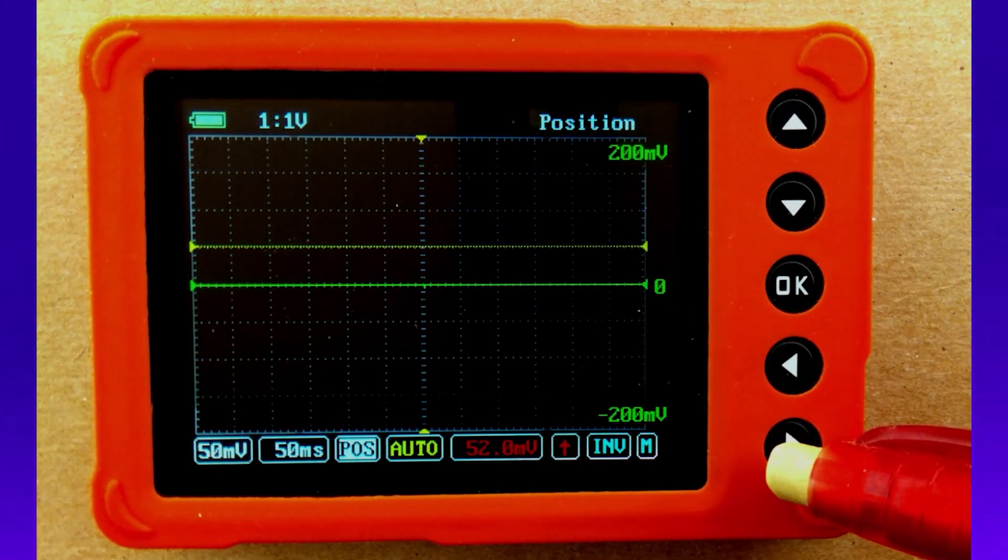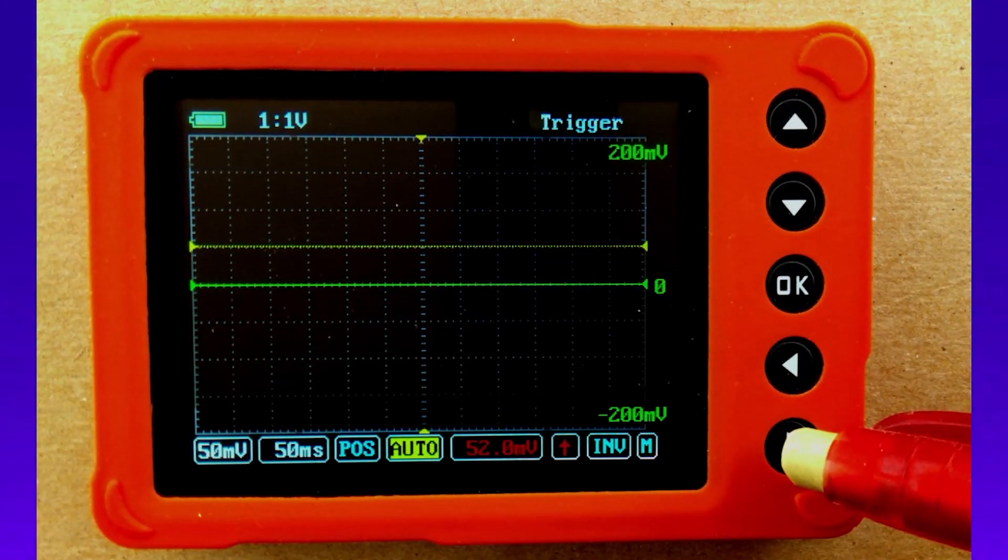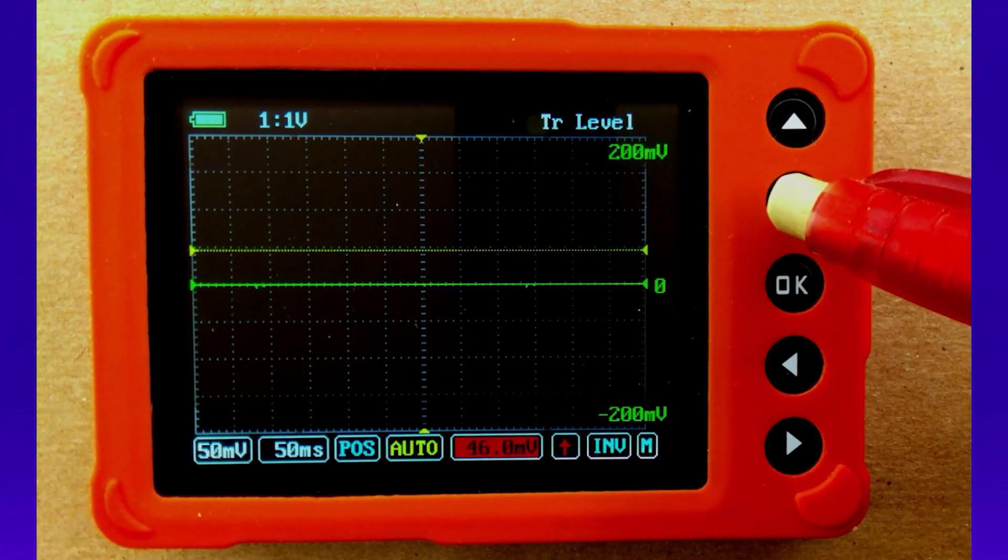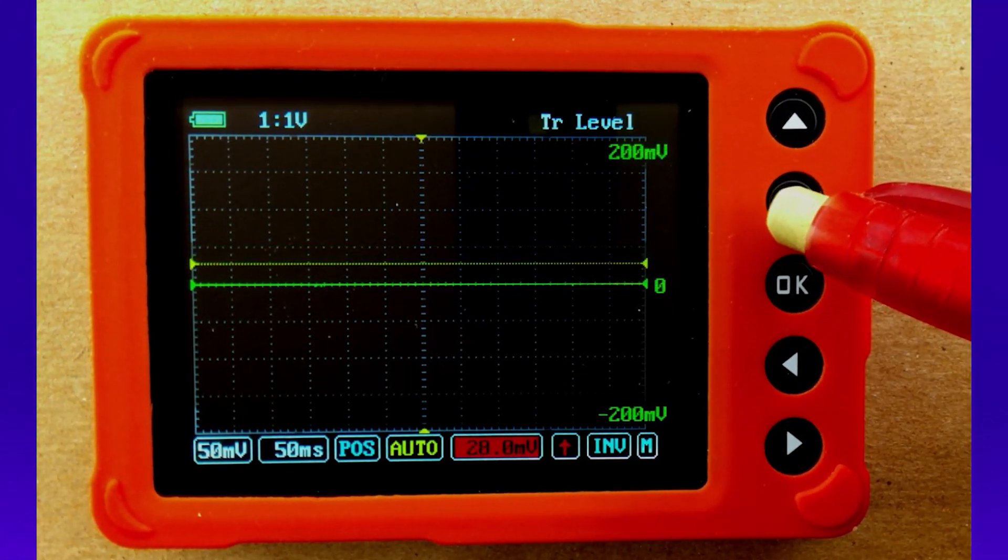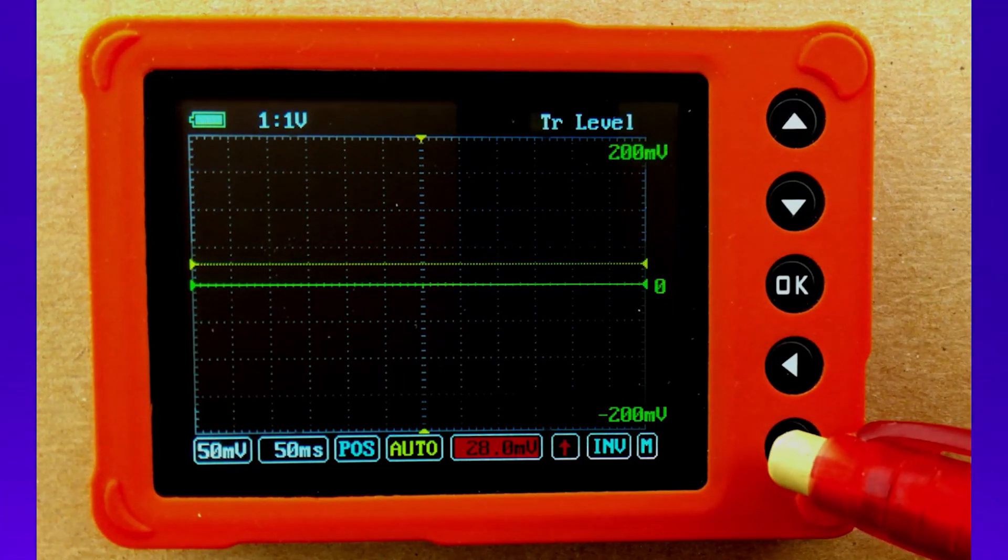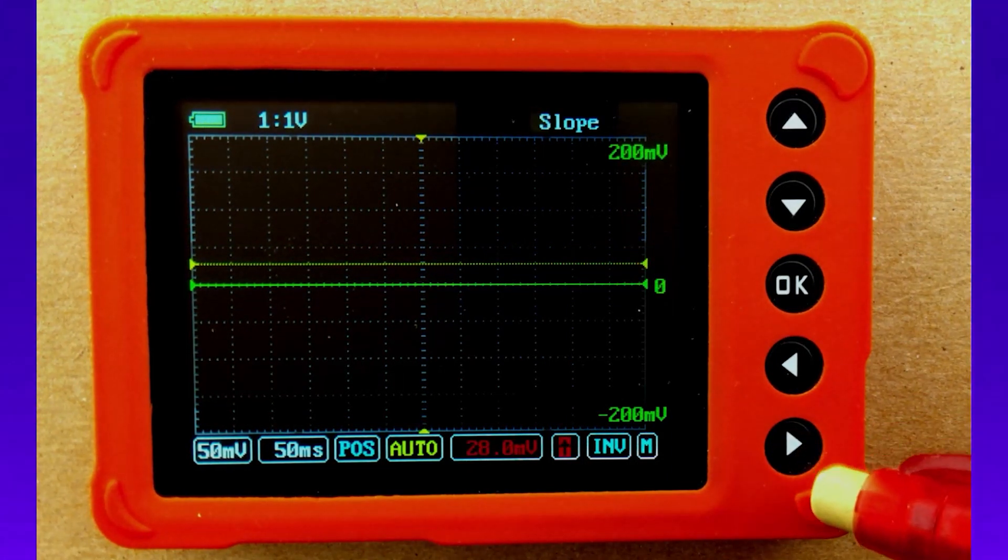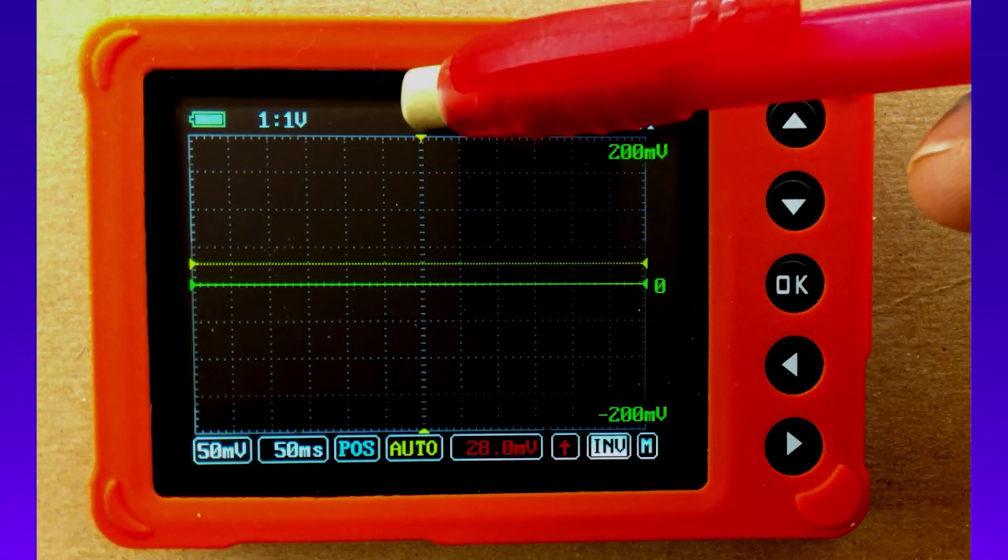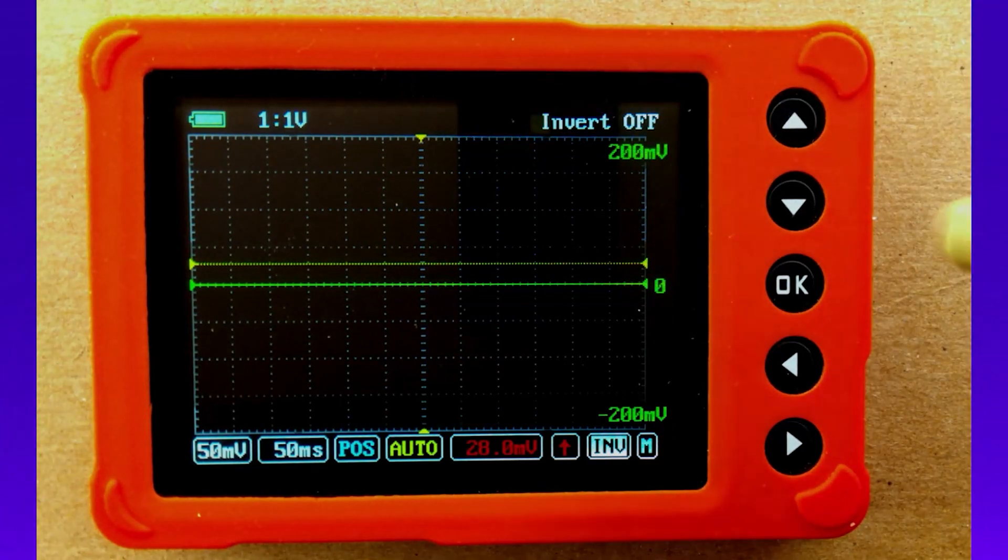We're going to have an auto trigger. And then we're going to have 28 millivolts on our trigger value here. So let's move this down to 28 millivolts. We're going to be on the rise. We're going to leave our invert off. And we want to have our horizontal trigger in the center of the screen where it is right now.